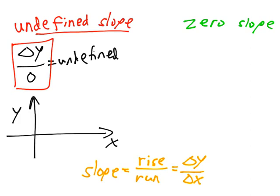So, how can a line have a change of y but have zero change of x? Well, this kind of line.